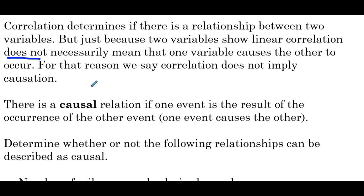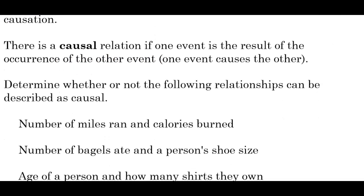Just because you get a correlation coefficient of 0.9999, that does not mean there's a cause and effect. There is a causal relation — not casual, causal — if one event is the result of the occurrence of the other event. So there's a cause and effect.